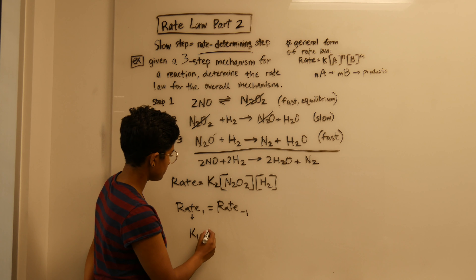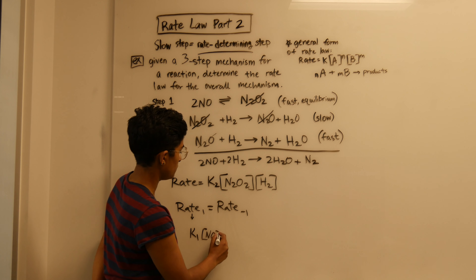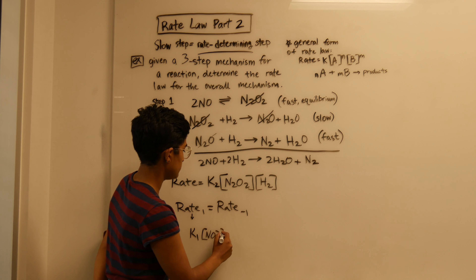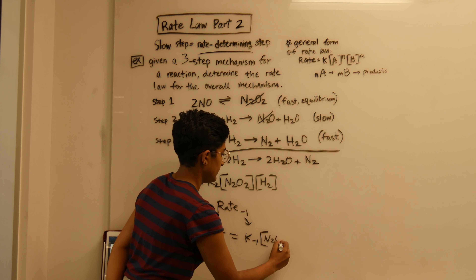If we write the rates for that: the rate of step one would be K1 times NO squared — that comes from the NO squared here — and then the rate of the reverse would be K negative one times N2O2.